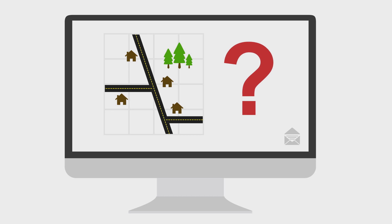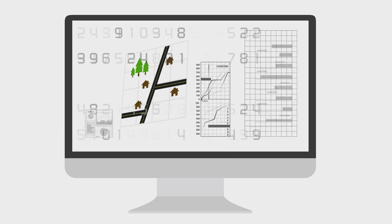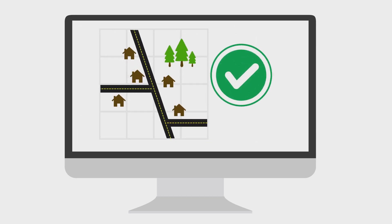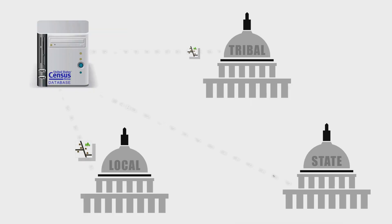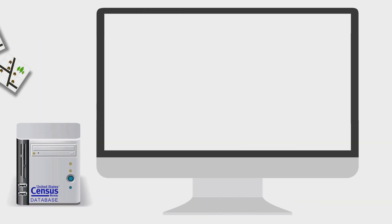Next, governments update their roads and boundaries on the Census Bureau's maps or digital files. Then, local governments send their updated Census Bureau maps or digital files back to the Census Bureau.